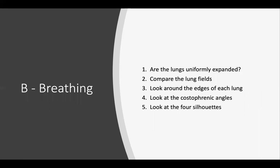Next is B for breathing. To check for breathing, you have to check for the following: Are the lungs uniformly expanded? Compare the lung fields. Look around the edges of each lung, look at the costophrenic angles, and look at the four silhouettes.